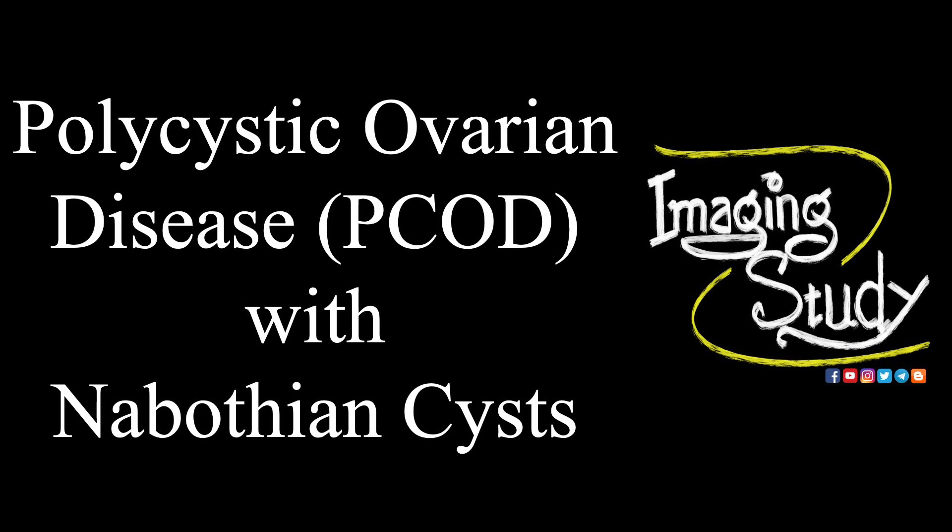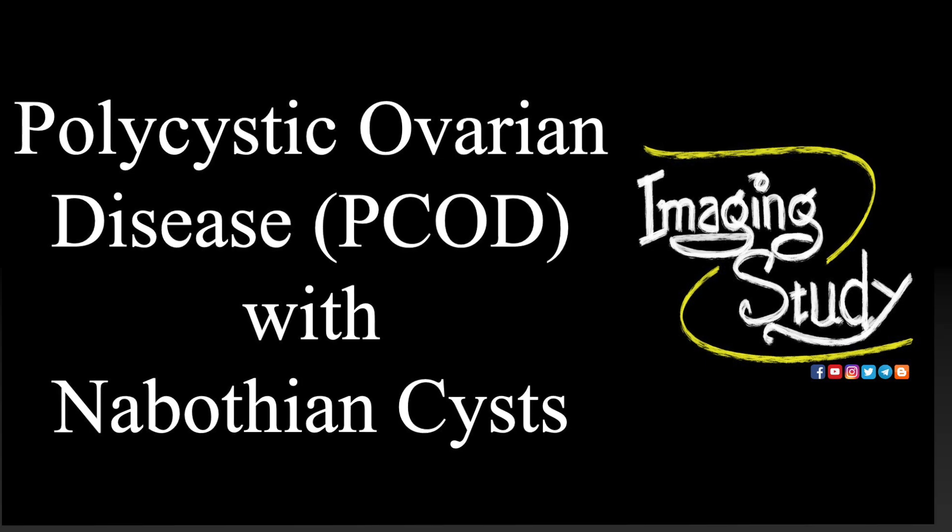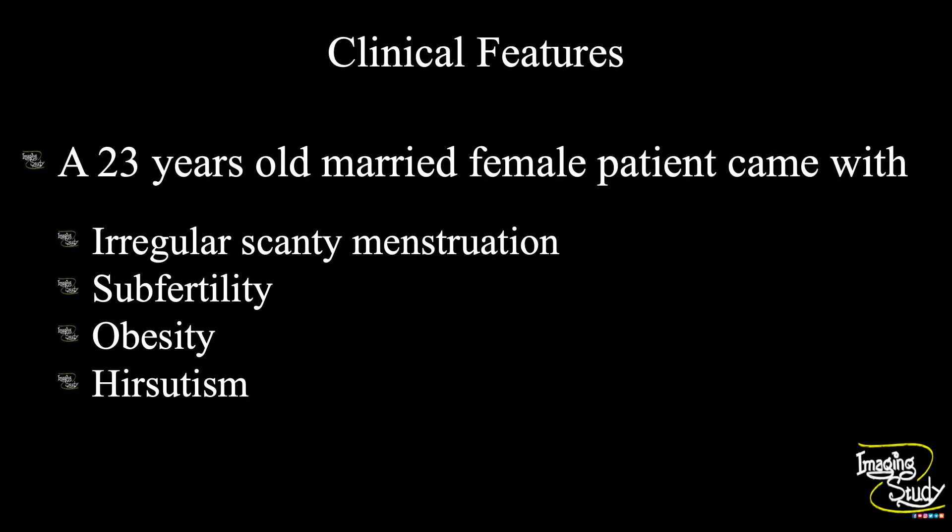Hi everyone, welcome to imaging study. Today we are going to see a case of polycystic ovarian disease with Nabothian cysts. A 23-year-old married female patient came with irregular scanty menstruation, sub-fertility, obesity, and hirsutism.